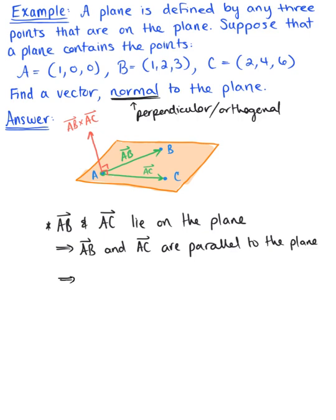We can make the conclusion using the orientation of the cross-product that the vector AB cross vector AC is normal to the plane containing vectors AB and vector AC by definition.